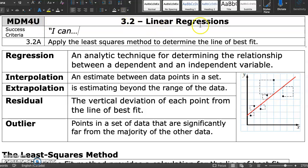MDM for you 3.2 linear regressions. Previously we learned how to do a correlational study between two variables to determine whether there is a predictable change in one variable if there's a change in another.